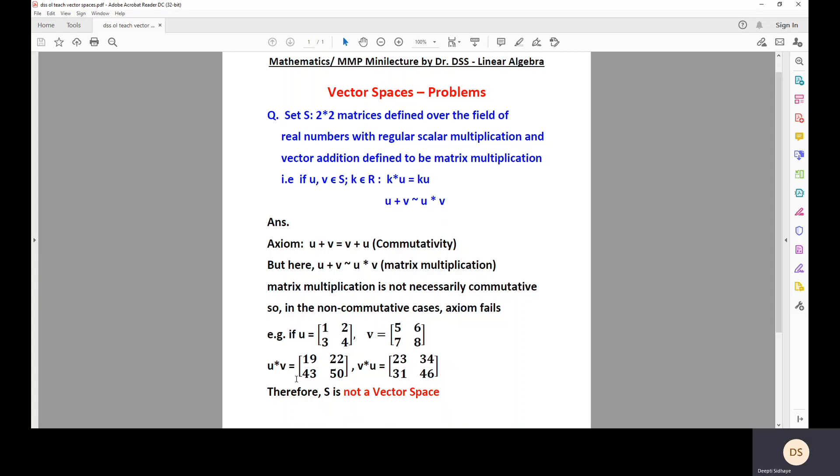So as you can clearly see here, U into V is not equal to V into U or by using the definition, due to the condition imposed in the question, U plus V is not equal to V plus U. It is not commutative. That means this axiom fails.